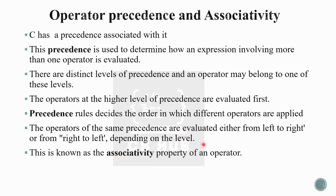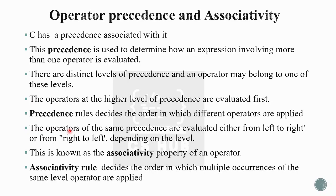Associativity is a property of an operator. There are two types of associativity: left to right and right to left. Associativity applies when operators of the same precedence are evaluated. Associativity rule decides the order in which multiple occurrences of the same level operator are applied. So, precedence rule is the order in which different operators are applied, while associativity rule is the order for same-precedence-level operators.